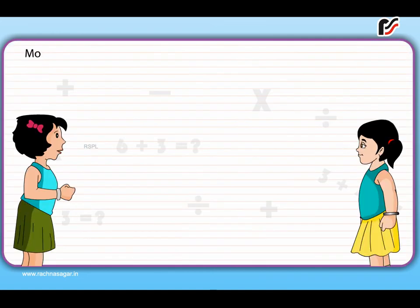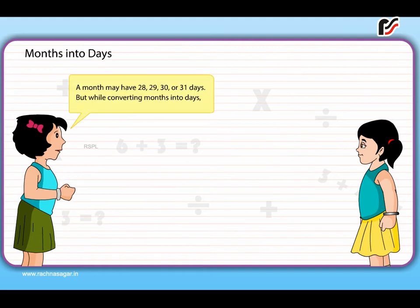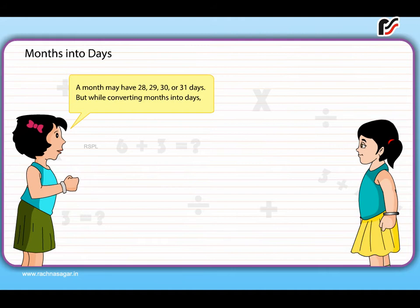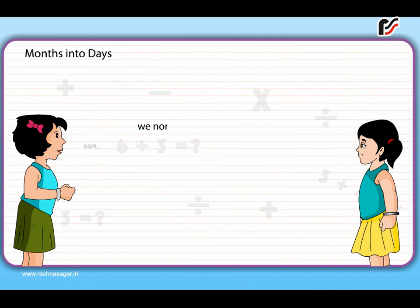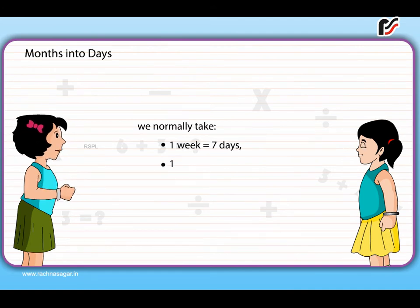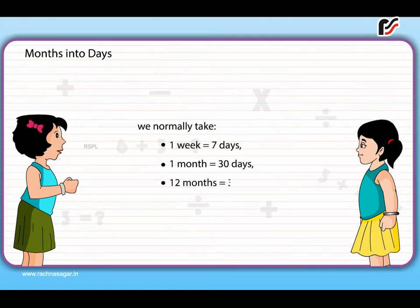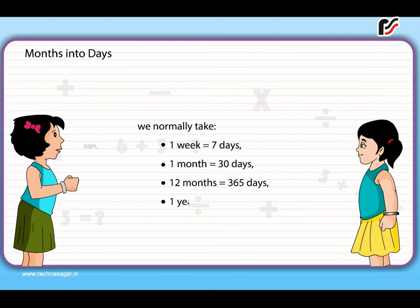Conversion — Months into days: A month may have 28, 29, 30, or 31 days. But while converting months into days, we normally take: 1 week = 7 days, 1 month = 30 days, 12 months = 365 days, and 1 year = 365 days.